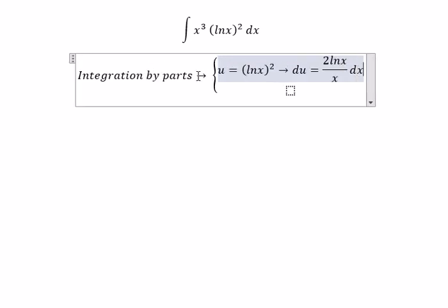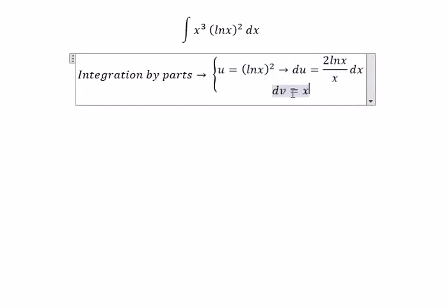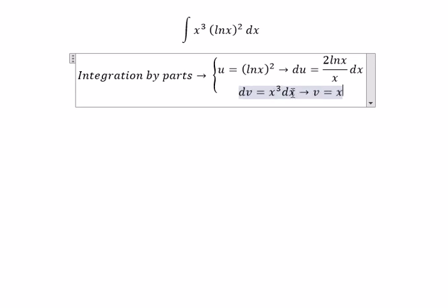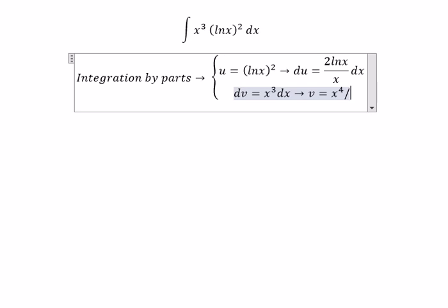And we have dv. dv, you got x to the power of 3 dx. So you got v equals to x to the power of 4 over 4.